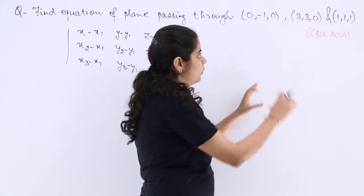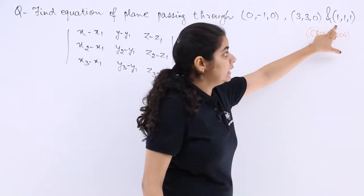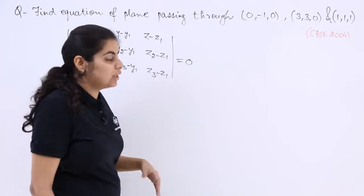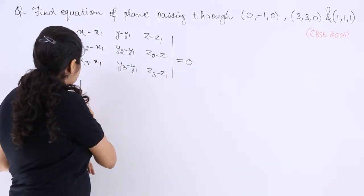So what is your x1? 0, x2, 3 and x3 is 1 and so on. You can find out y1, y2, y3 and so on. Just put the values. So what does it become?